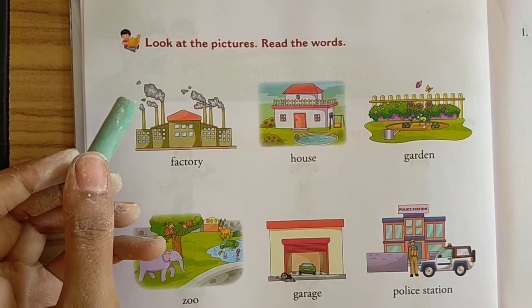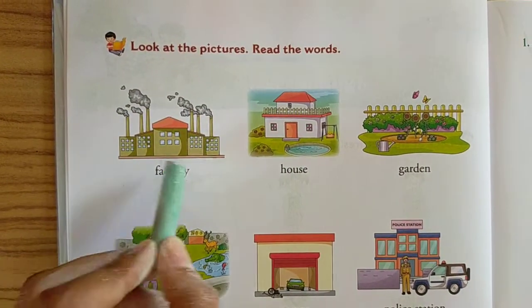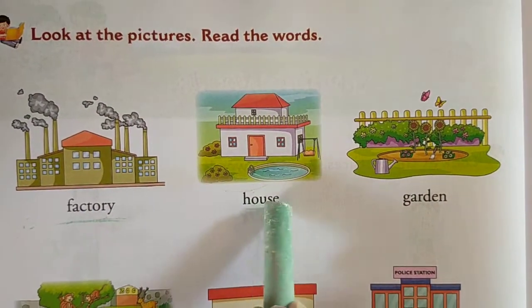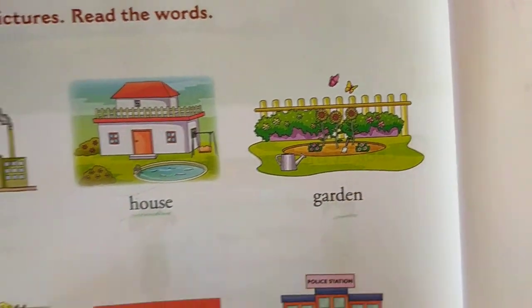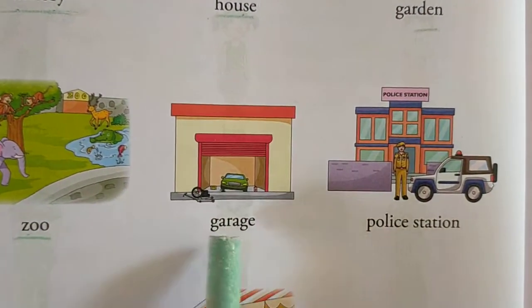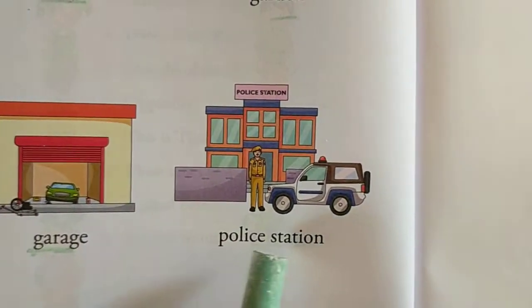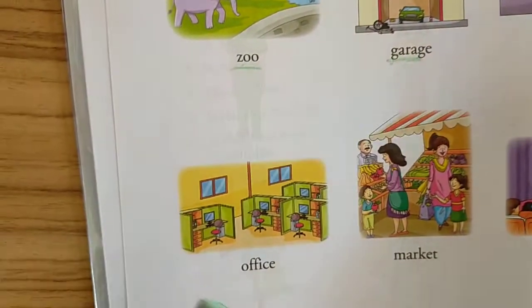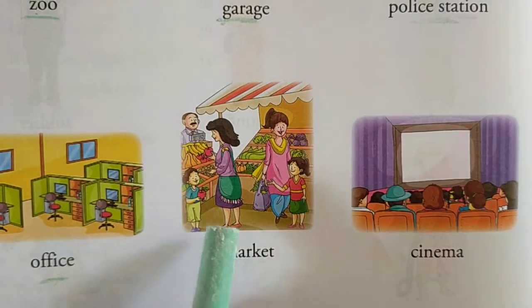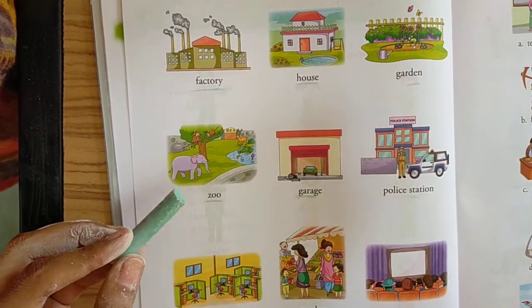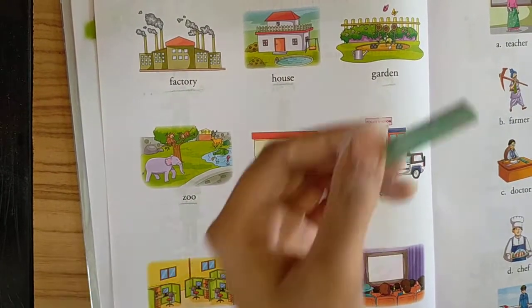Here are more pictures. Here is a factory, here is a house, a garden, a zoo, a garage, a police station, a market, a cinema hall. So students, if you identify any place, that place which is named — it falls under naming words.